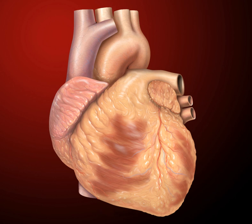The left ventricle pumps blood to the body through the aortic valve and into the aorta. Two small openings above the aortic valve carry blood to the heart itself: the left main coronary artery and the right coronary artery.